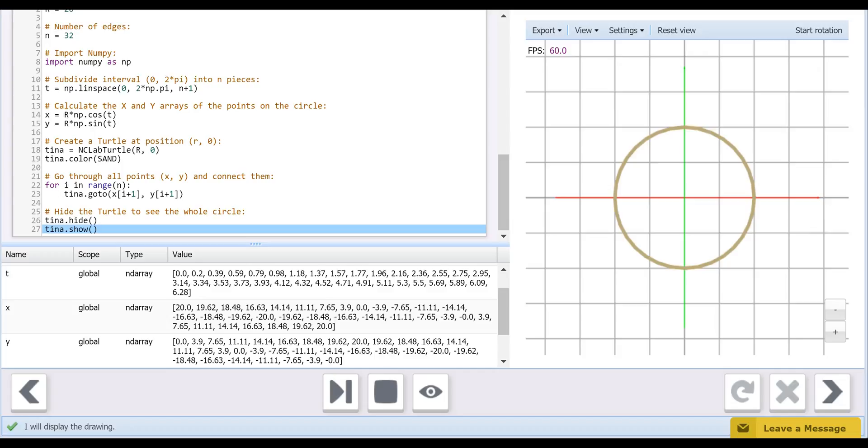If you copy the code from the demo into the Python Turtle app in the Creative Suite, you can experiment with different values for n and r to draw circles of different sizes and smoothness. Zoom in on the circle in the viewer to see the individual line segments.